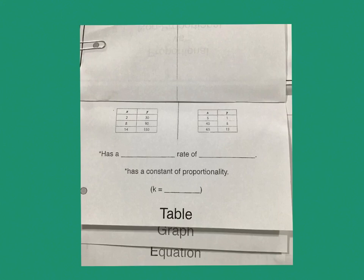When you open up this first flap, the label is called a table for this section. We're going to fill in these blanks. When you have a table, we are going to be looking to see if the table has a constant rate of change.